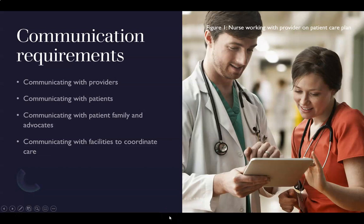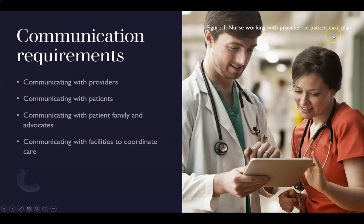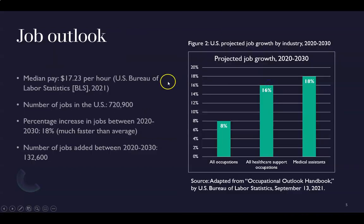On the next slide, we have another example of a photo. If it's more essential to the content, you may want to name it as a figure and provide a figure line. At the top it says 'figure one,' indicating it's the first visual in the document, followed by a description of what it's showing. On the following slide, there's a graph — also a visual — labeled 'figure two,' the second visual seen so far, with a description of what it's showing.